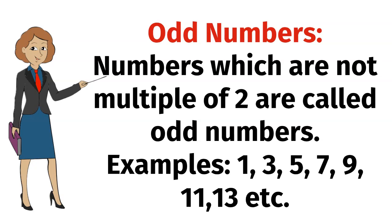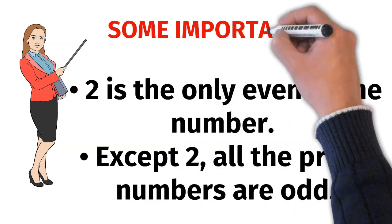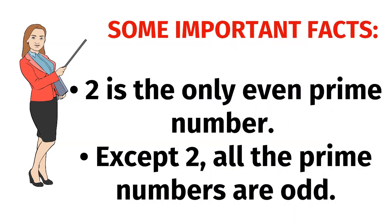Some important facts: 2 is the only even prime number. Except 2, all the prime numbers are odd.